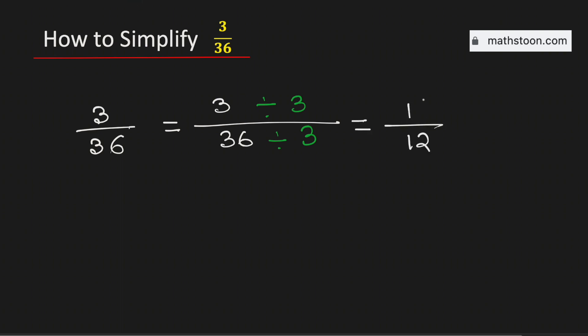And this fraction is already simplified. Therefore, the fraction 3 over 36 simplified is equal to 1 over 12, and it is in its lowest terms. And this is our final answer.